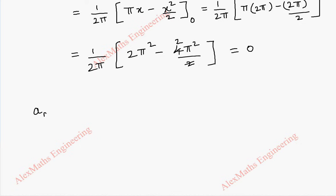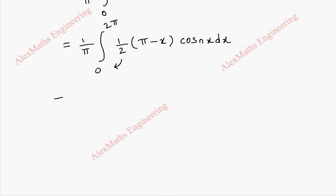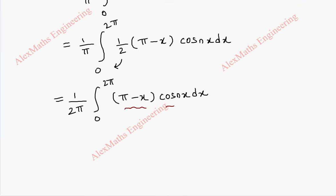Coming to aₙ, the formula is (1/π) ∫₀²π f(x) cos(nx) dx. Substituting f(x), this is (1/π) ∫₀²π (1/2)(π − x) cos(nx) dx. Taking the constant 1/2 outside, we get (1/2π) ∫₀²π (π − x) cos(nx) dx. Here we use integration by parts, where (π − x) is the algebraic term and cos(nx) is the trigonometric term.